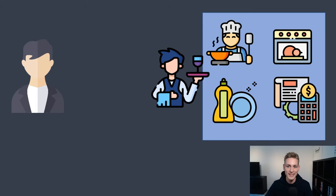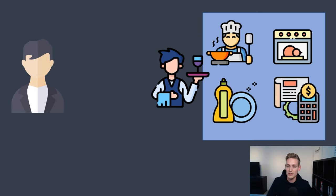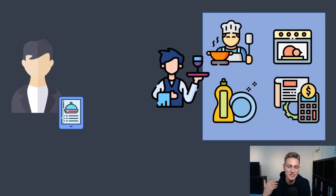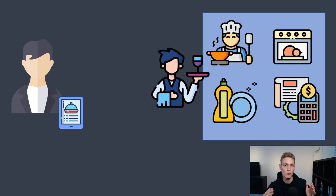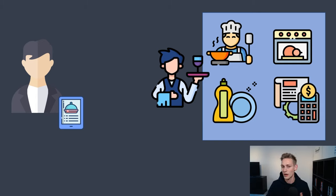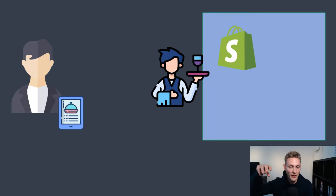In this particular case, the waiter can be seen as the API of that restaurant, because he helps us to communicate with the system behind him. And if you want, the food menu could be seen as the API documentation for food and drinks, because it tells us exactly what kind of requests we can make, and it also tells us what you expect to get back — or in other words, what the response might look like. And now we have to transfer that knowledge to the Shopify space.